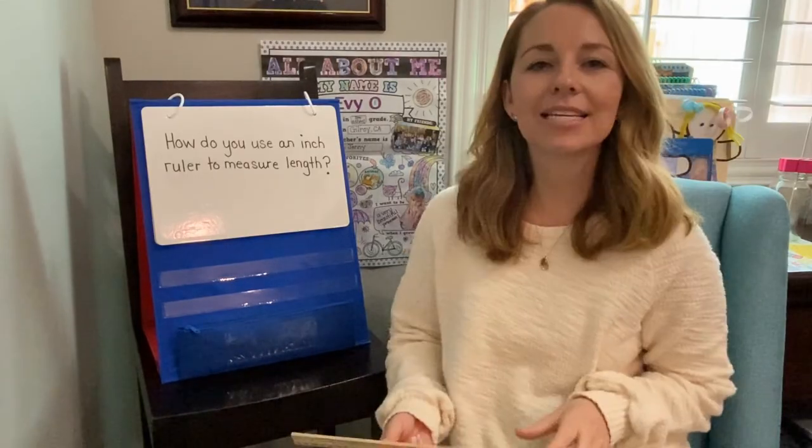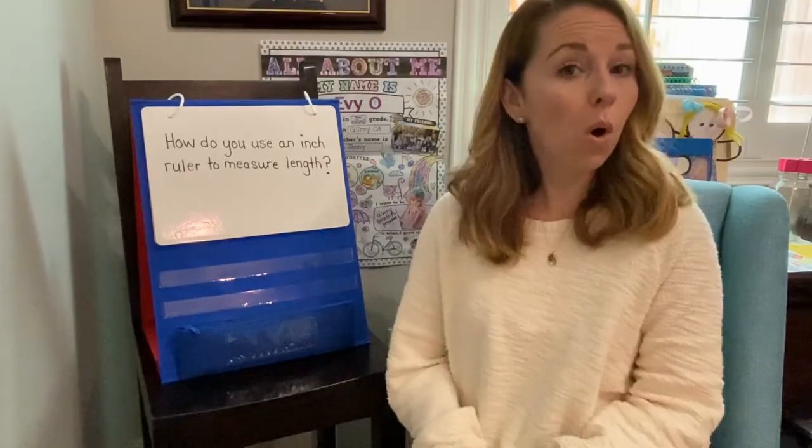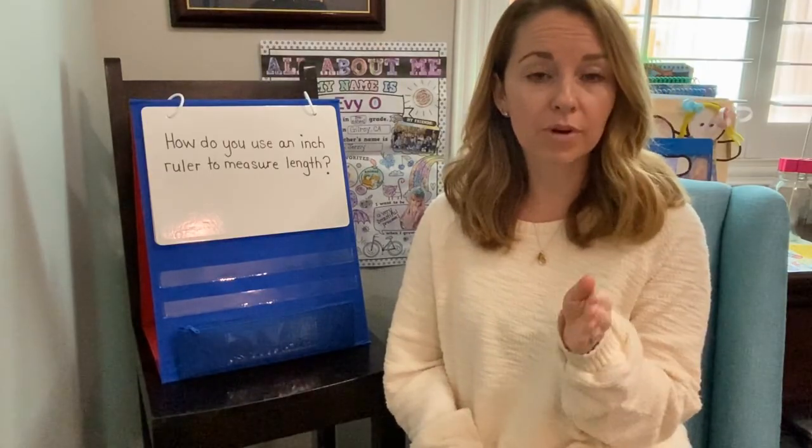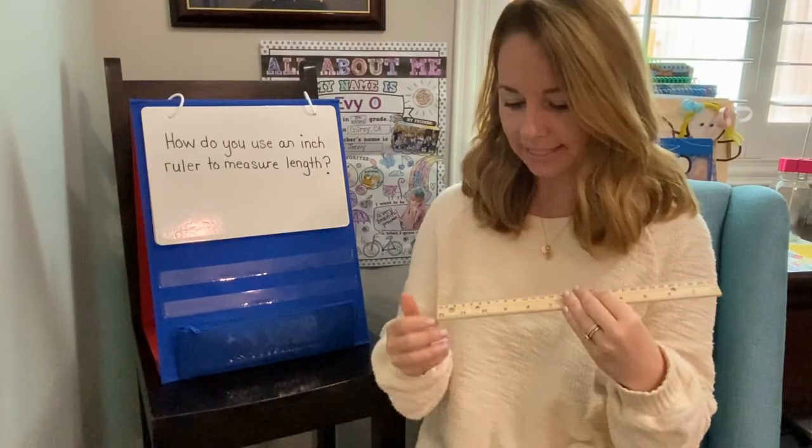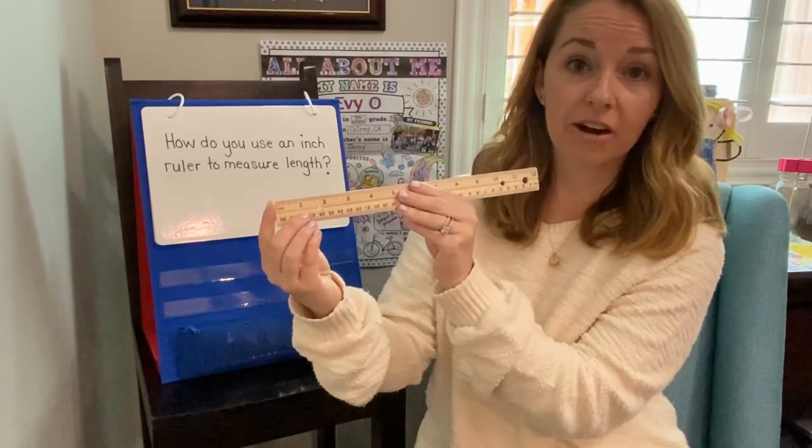All right mathematicians there you have it. That is how you use an inch ruler to measure length. Remember step one you always have to measure starting with the zero. There is not a zero on our inch ruler it's actually a first tick so we have to make sure we line it up there.